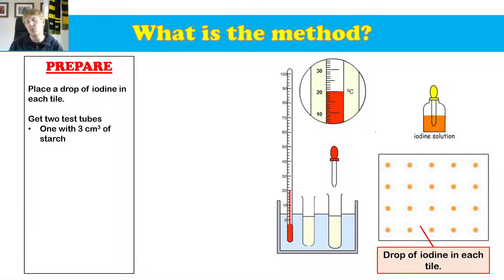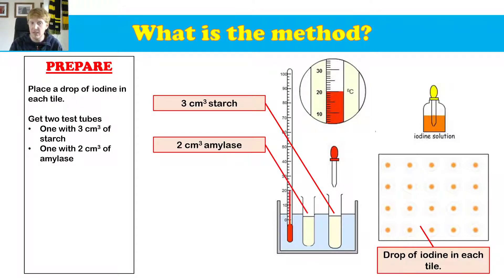We're then going to get two test tubes. In one of the test tubes, we're going to put three centimeters cubed of the starch solution, and you can see it just there in that water bath. In the other test tube, we're going to put two centimeters cubed of amylase.